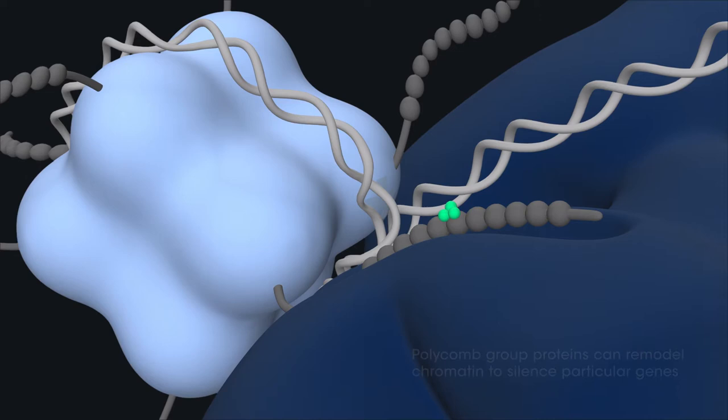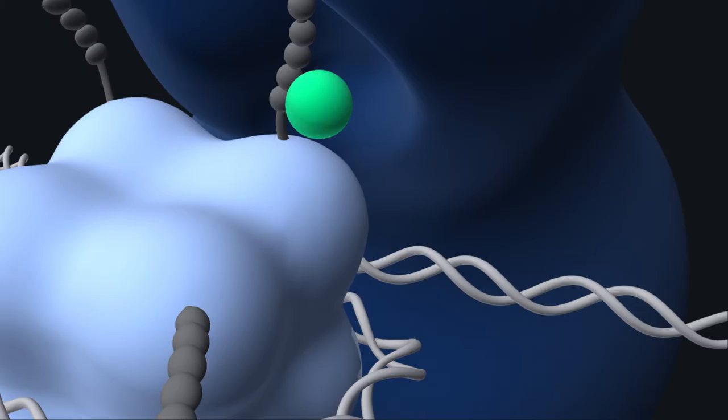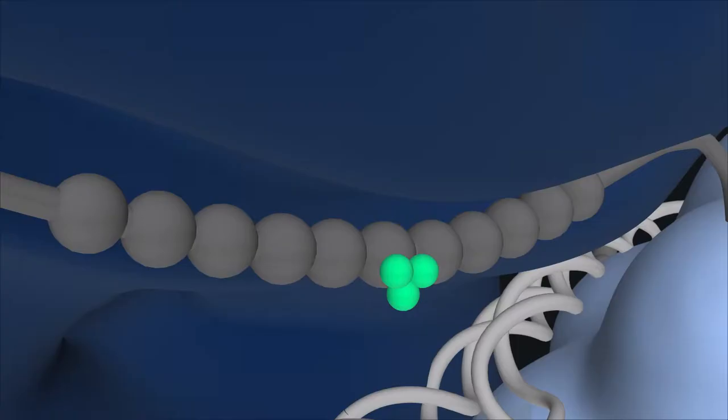The polycomb group proteins can remodel chromatin to silence particular genes and are widely studied in the context of transcriptional regulation. They play a key role in embryonic development and are often affected in human diseases including cancer.